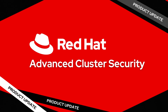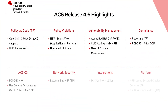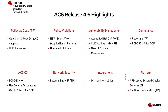Welcome to the Red Hat Advanced Cluster Security for Kubernetes product update. In this video, I'll be explaining everything new in ACS 4.6. 4.6 is an extremely feature-heavy release, so we'll examine each topic individually. Each topic is listed in the timestamps below, along with a link to the documentation, and in some cases extra links to walkthroughs of that specific feature. With that being said, let's get into it.